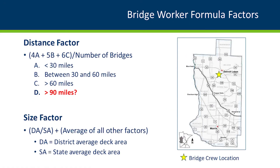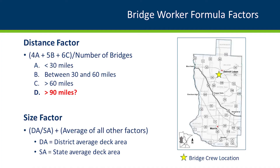The distance factor is divided into three categories: bridges less than 30 miles from the bridge shop, bridges between 30 and 60 miles, and bridges greater than 60 miles. The empirical values — 4, 5, and 6 — multiplied by those different numbers of bridges in those categories are an indication of the time lost due to travel. We have some districts with a larger area where the bridge crew location might be greater than 90 miles away, so there may be a need for an additional category.